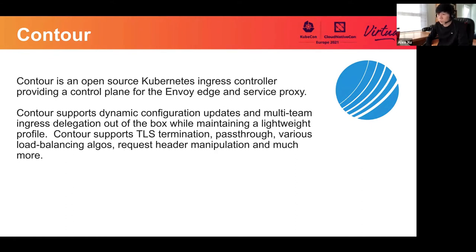We are built around another really popular open source project called Envoy. Contour is the control plane for Envoy, which is acting as a data plane. The Envoy instance, deployed and managed by Contour, is essentially functioning as a reverse proxy and a layer seven load balancer. The communication between Contour and Envoy is protected by mutual TLS. There are a lot of Ingress controllers on the market today, and this session is to highlight why you might want to use Contour. Please reach out to us on GitHub, Slack, or through email.